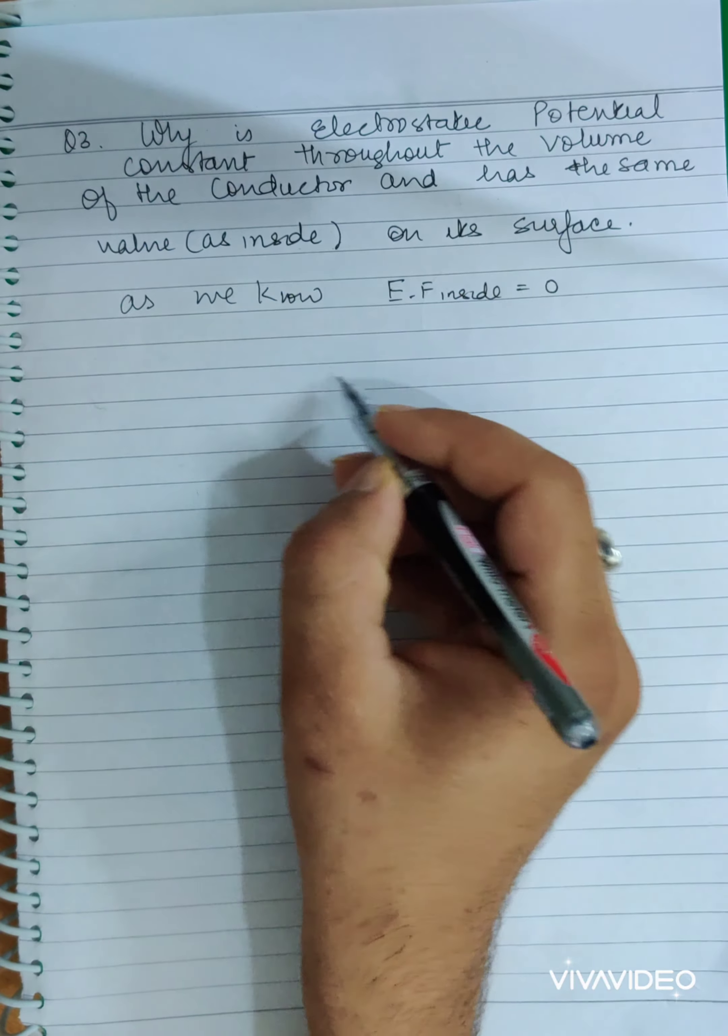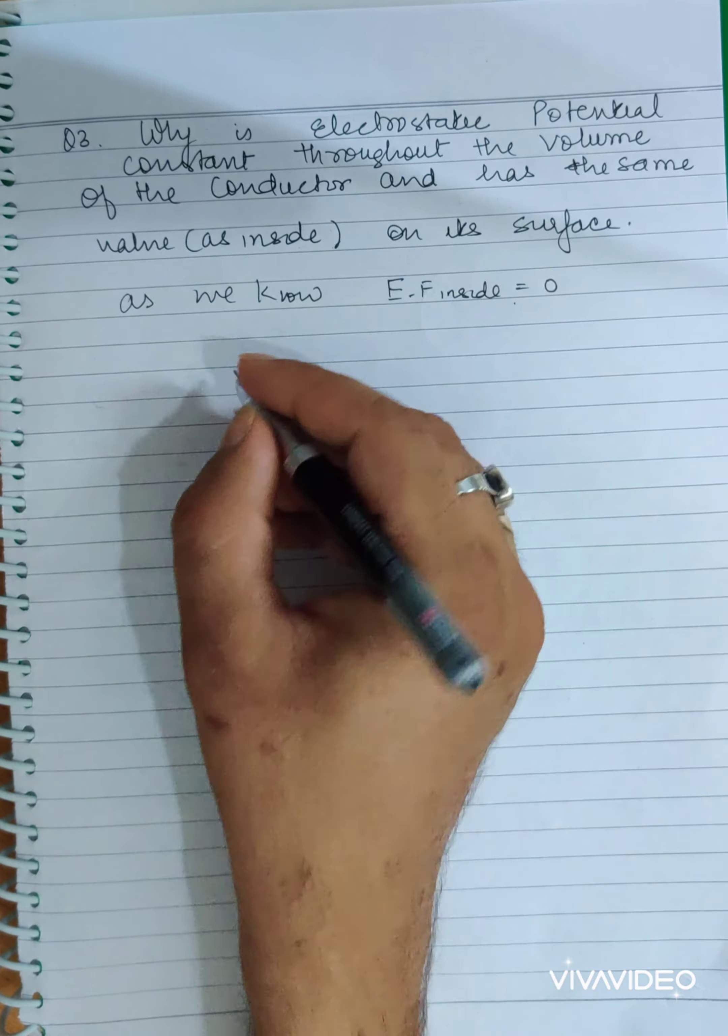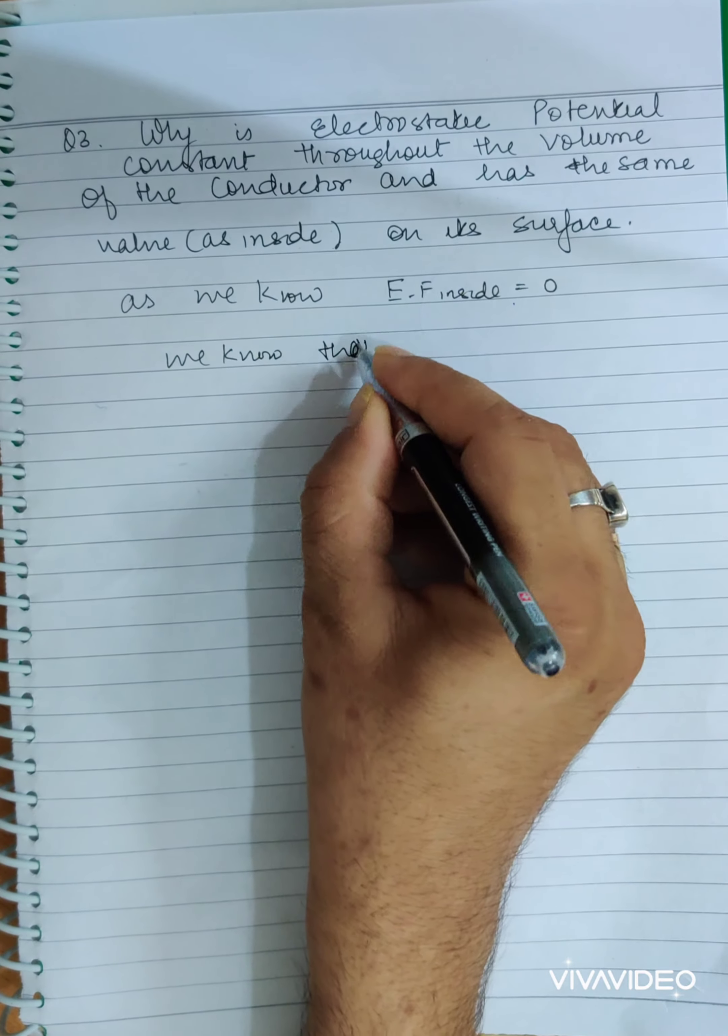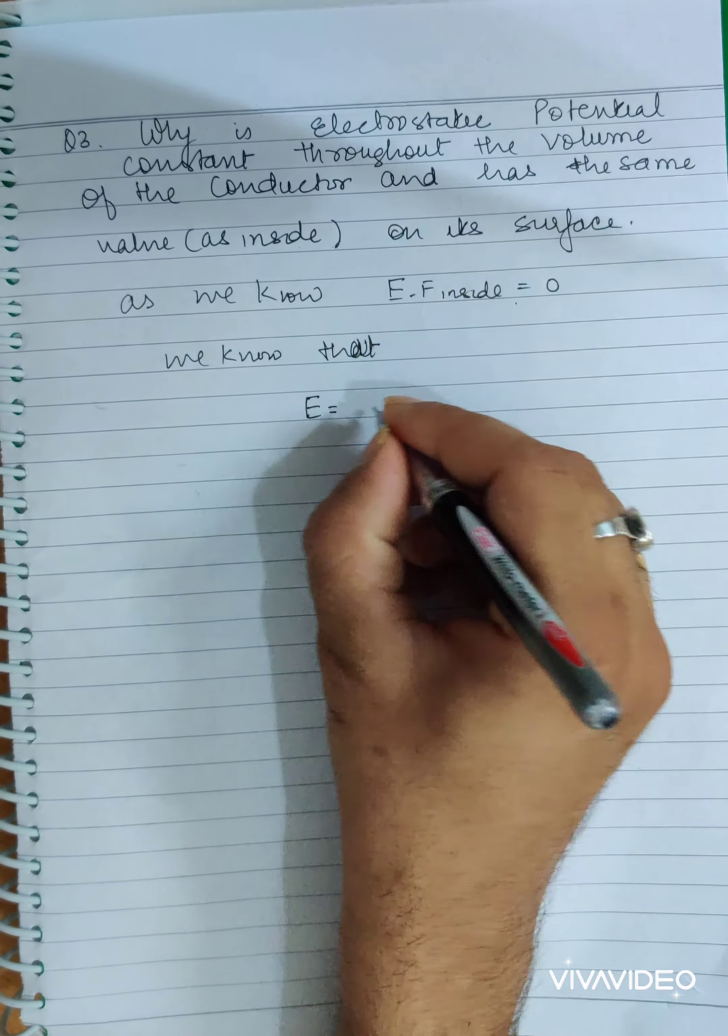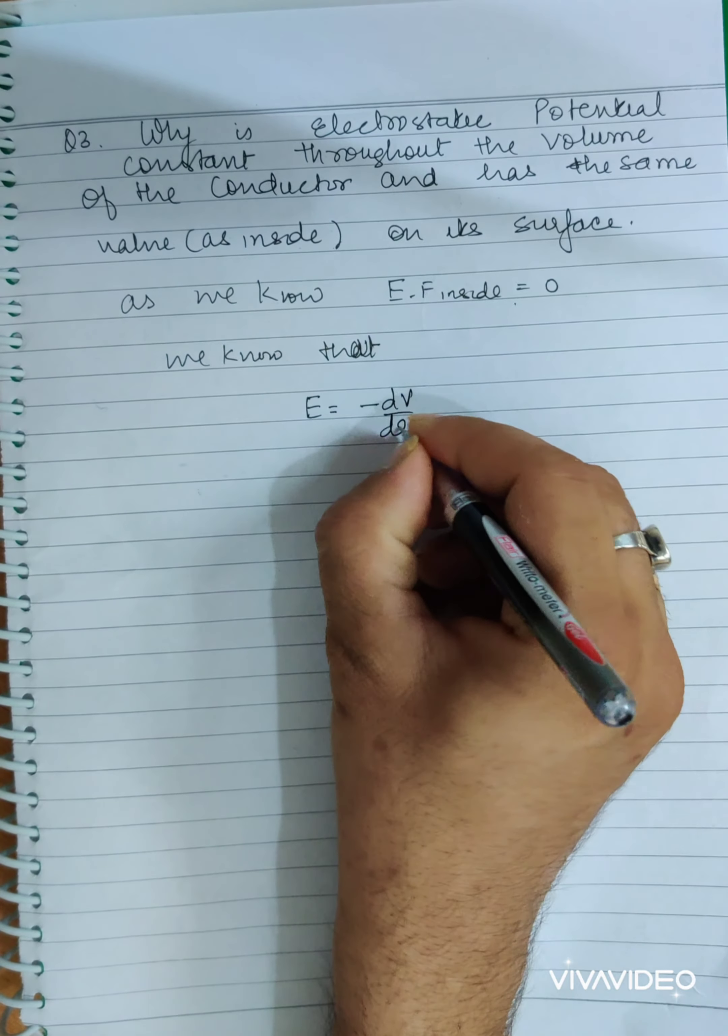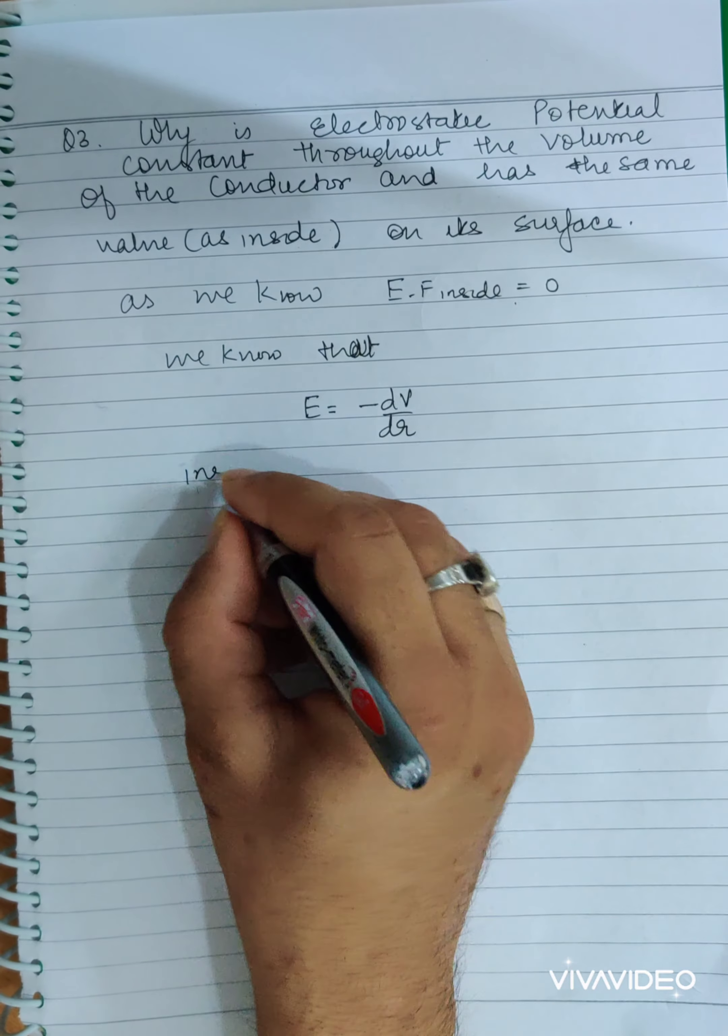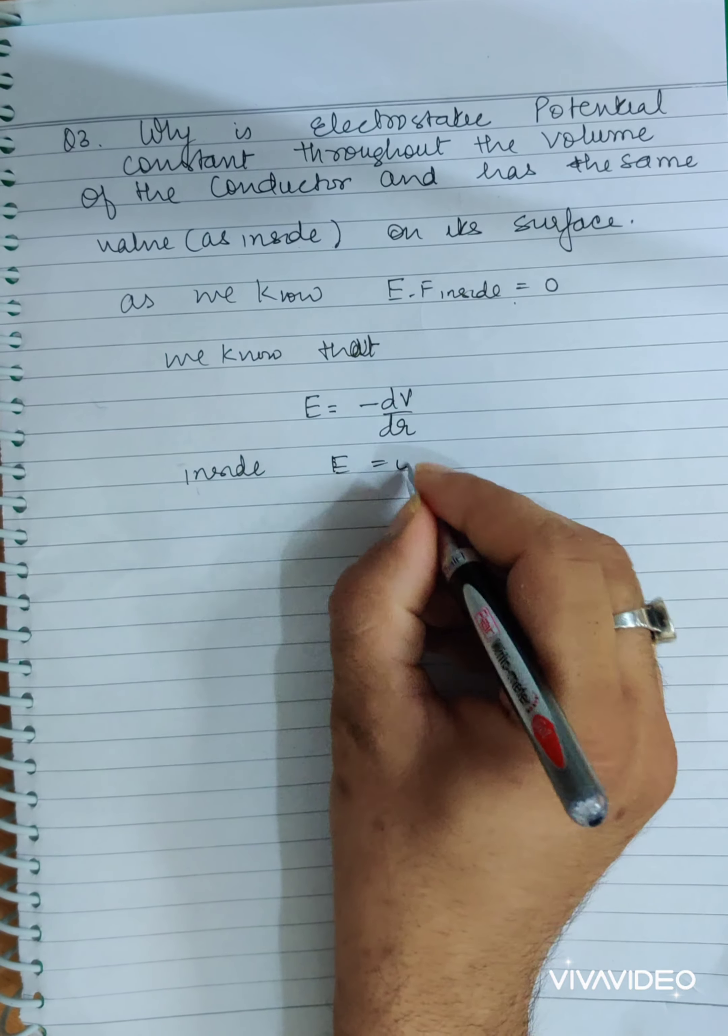Now, the electric field is zero. We know that E equals negative dV by dr. Inside, if we talk about it, the electric field is zero.